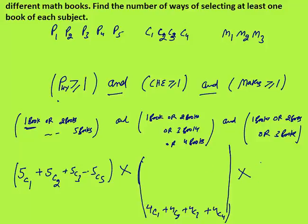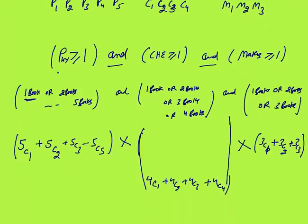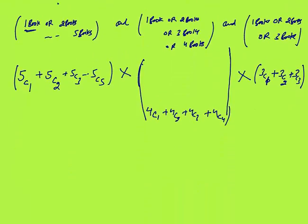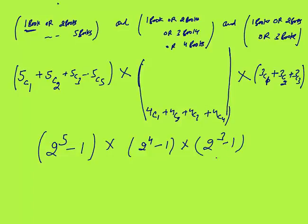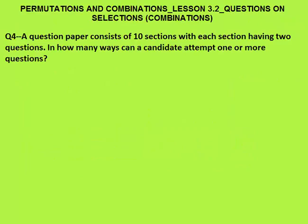For maths: I can select one book in 3C1 ways, or two books in 3C2 ways, or three books in 3C3 ways. So the total for maths is 3C1 + 3C2 + 3C3, which equals 2 raised to power 3 minus 1.